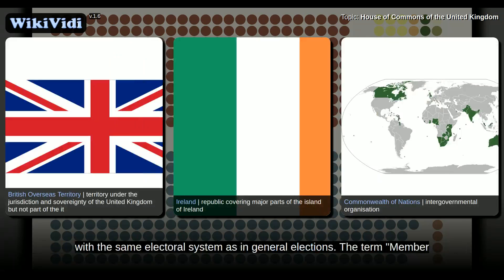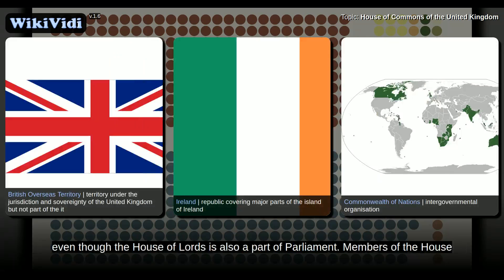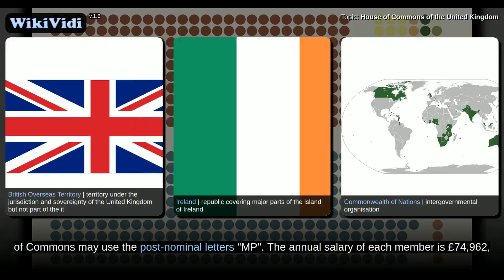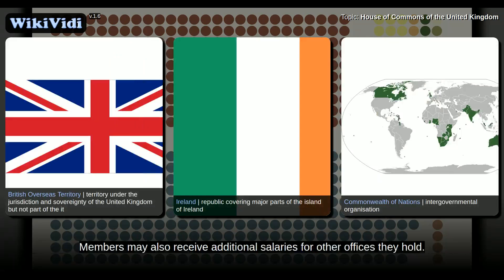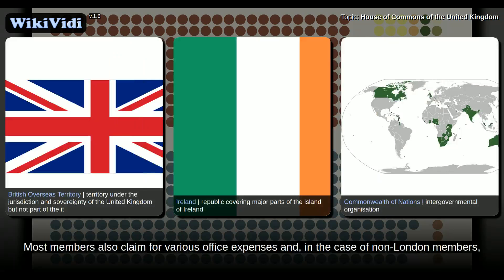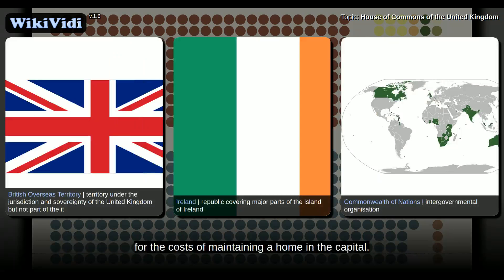The term Member of Parliament is normally used only to refer to members of the House of Commons. Members of the House of Commons may use the post-nominal letters MP. The annual salary of each member is £74,962, effective from 1 April 2016. Members may also receive additional salaries for other offices they hold. Most members also claim for various office expenses and, in the case of non-London members, for the costs of maintaining a home in the capital.